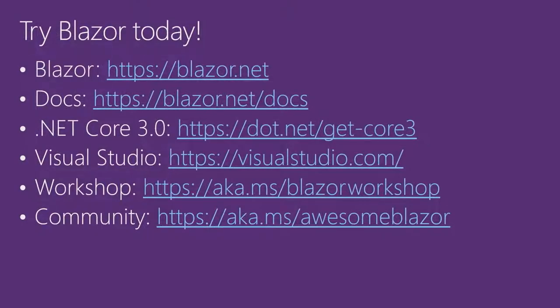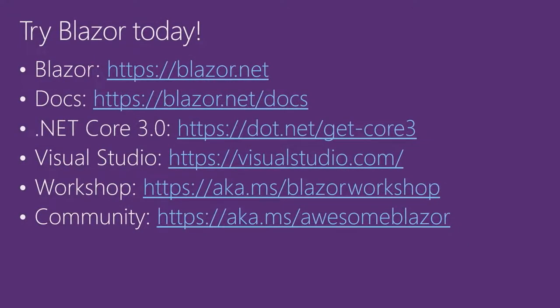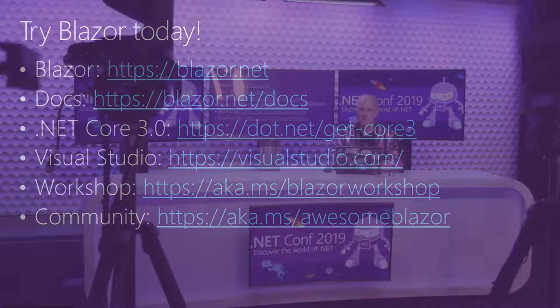That is the future of Blazor on the client. I hope you enjoyed what you saw and are excited about it. Give them a try — try out Blazor and Electron with the sample, try out Blazor WebAssembly. Give us feedback and make sure you download .NET Core 3.0 today. Here are some useful resources to get started with Blazor. Go to Blazor.net to get the bits and find the documentation. You can get the .NET Core 3.0 bits at dotnet.microsoft.com/get-core3. Make sure you get Visual Studio — on Windows you'll want the latest release, Visual Studio 16.3. We have a wonderful Blazor workshop if you want to learn how to program with Blazor and participate in the Blazor community, with great folks like Chris Sainty building JavaScript interop libraries and component libraries.